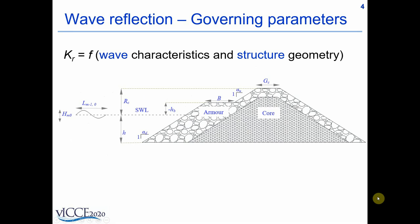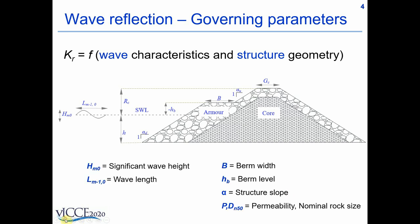This slide shows the structural and hydraulic governing parameters that affect the wave reflection from berm breakwaters. Wave parameters such as the significant spectral wave height, spectral wave length and structural parameters such as berm width, berm level, structure slope above and below the berm and rock size are the major ones that govern the wave reflection from the structure.